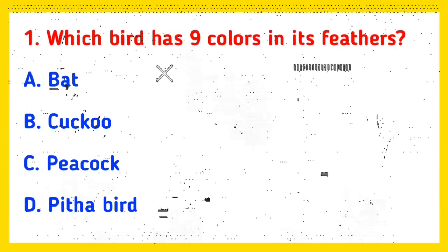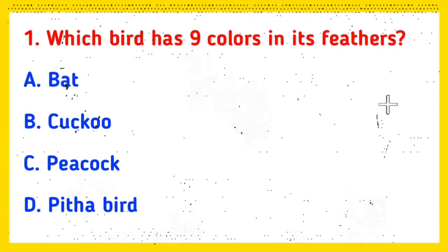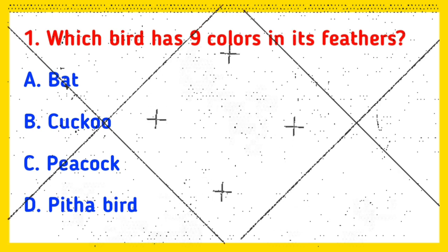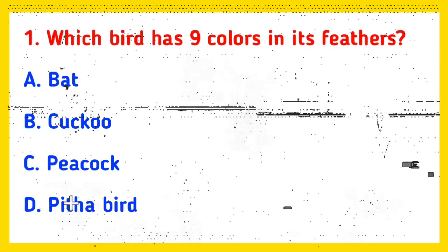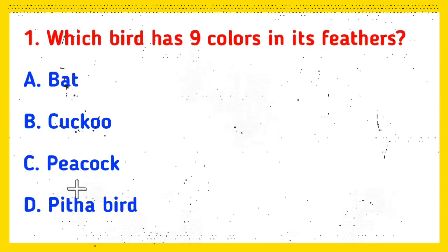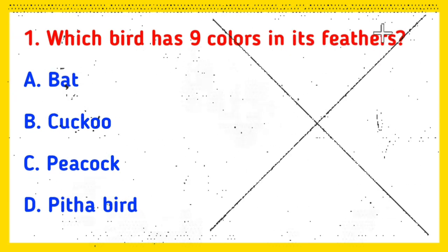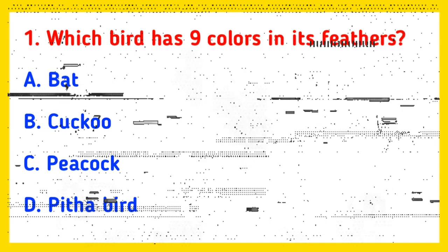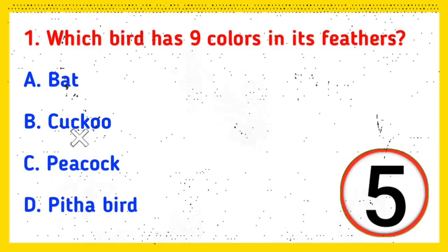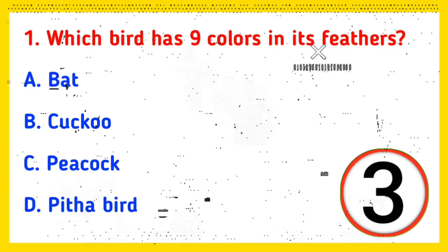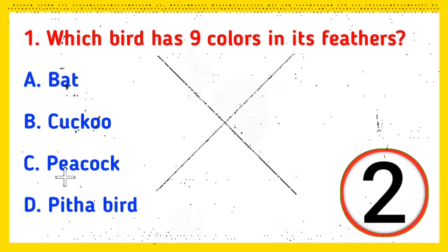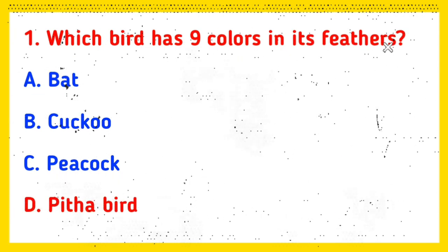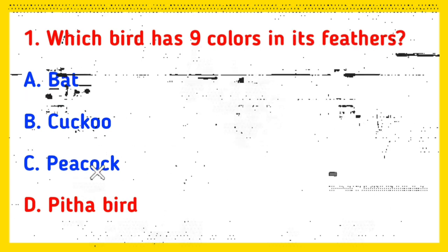Q1: Which bird has 9 colors in its feathers? Option A: Bat, Option B: Cuckoo, Option C: Peacock, Option D: Pitha bird. And the correct answer is Option D, Pitha bird.